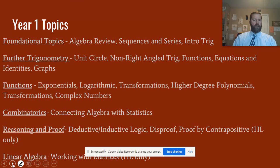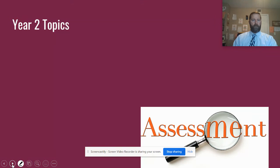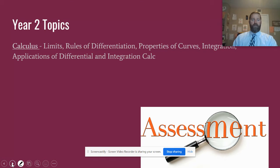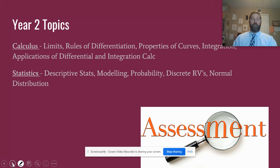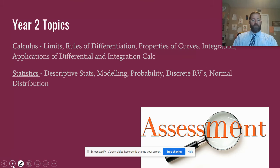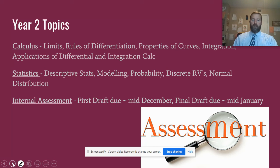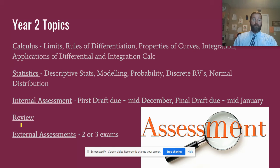Linear algebra is also part of year one — that's a quick chapter. In year two, we talk about calculus and statistics as the primary content. The calculus is fairly close to AP Calculus AB, and the statistics course is fairly close to a full AP Statistics course, though some topics are left out. In addition to year two content, we'll be working on the internal assessment — a 12 to 20 page paper — and there is a review period in preparation for the external exams: two exams for SL students and three for HL students.